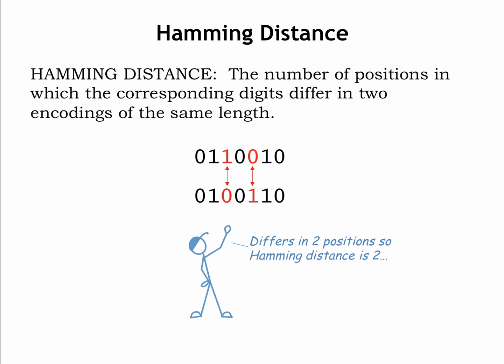If someone tells us the hamming distance of two encodings is 0, then the two encodings are identical. Hamming distance is a handy tool for measuring how encodings differ.